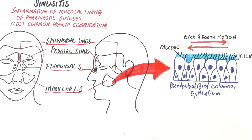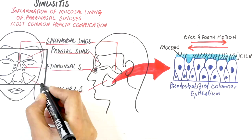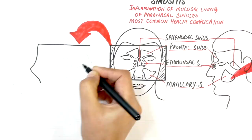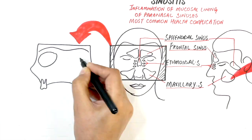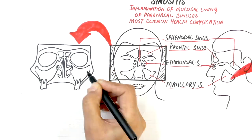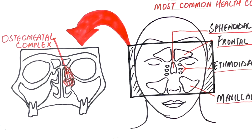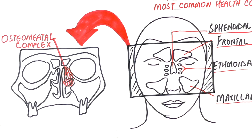Let's take a cross section of this area and look at the osteomatal complex. The osteomatal complex is a network of small channels or holes which provide a pathway for ventilation and drainage of the sinuses into the nasal cavity. Gravity also plays an important role in the removal of secretions from these sinuses above to the nasal cavity below.